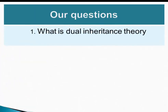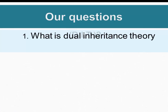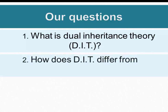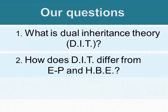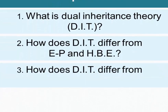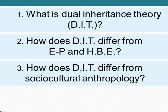We're going to answer three questions. First, what is Dual Inheritance Theory? Secondly, how does Dual Inheritance Theory differ from evolutionary psychology and human behavioral ecology? Thirdly, how does Dual Inheritance Theory differ from sociocultural anthropology and, more broadly, the social science approach?